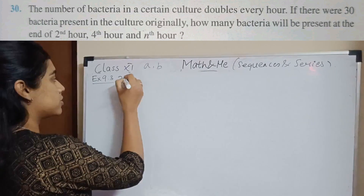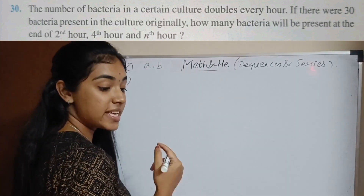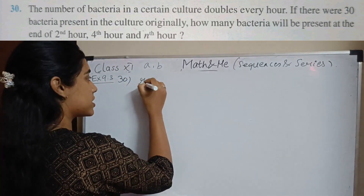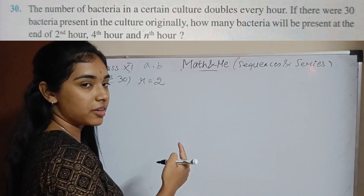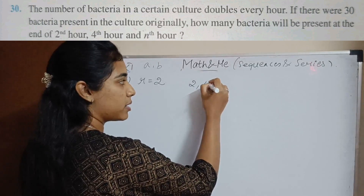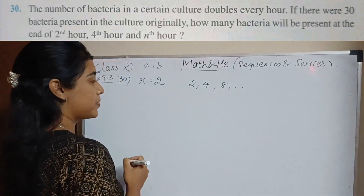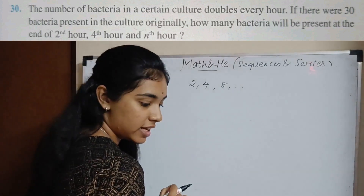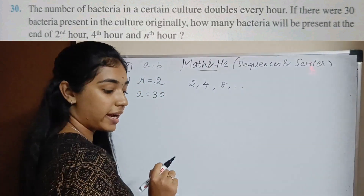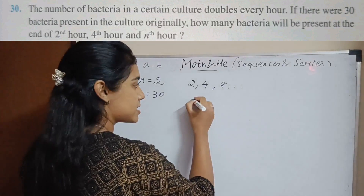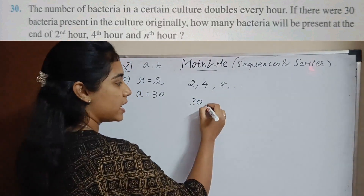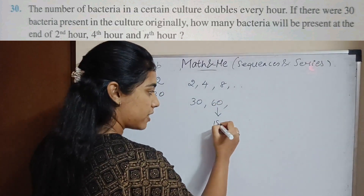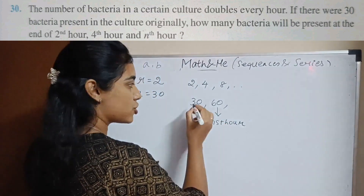Question 30: The number of bacteria in a certain culture doubles every hour. If there were 30 bacteria originally, so a equals 30. We need to find how many bacteria will be present at the end of the second hour. In the first hour it doubled — this is a2, not a1. Originally there were 30 bacteria, after first hour it becomes 60 which is a2.